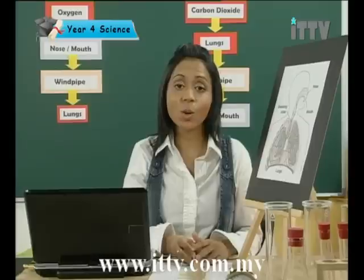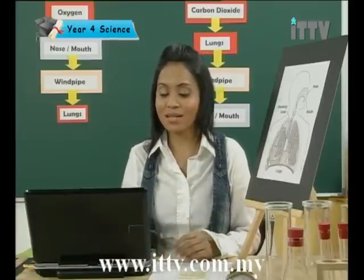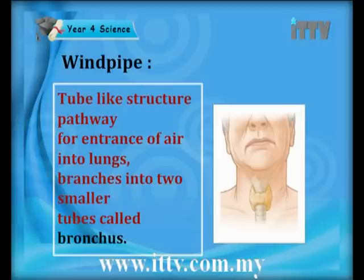Shall we see what all these organs do in more detail? The nose consists of fine hairs to prevent dust and other fine particles from entering. Next, the windpipe — it's a tube-like structure which has a pathway for the entrance of air into the lung, and it also branches into two smaller tubes known as the bronchus.